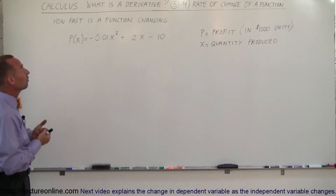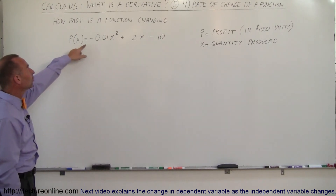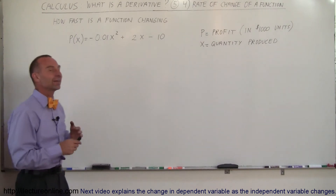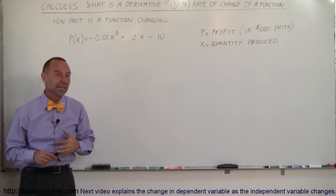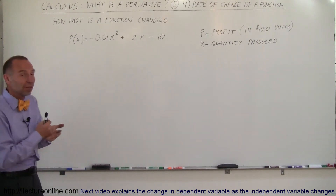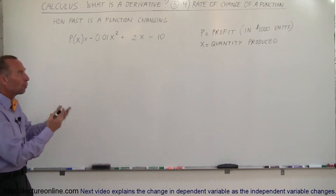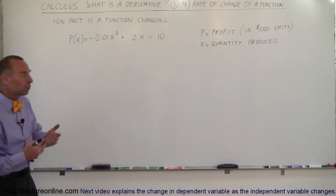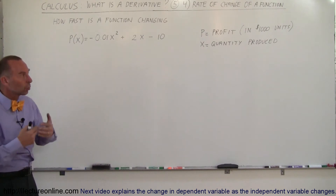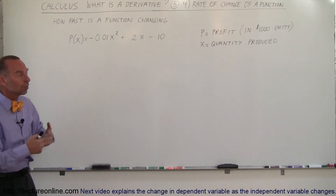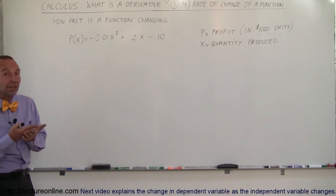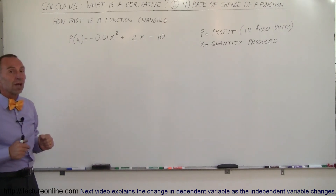Here we have an interesting function: p(x) = -0.01x² + 2x - 10. What do p and x represent? In this case, p represents the profit — so if an operation builds a certain number of units, x represents the quantity produced. You sell them, and profit is then represented in terms of x in thousands of dollars.